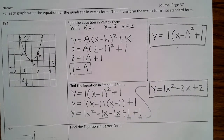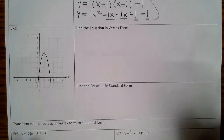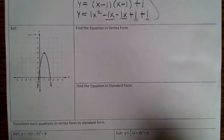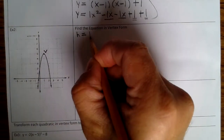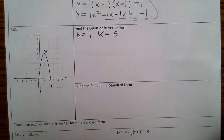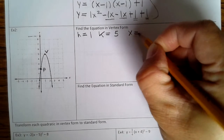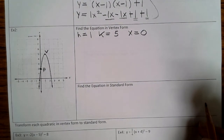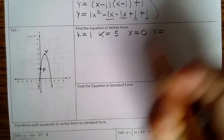Go ahead and finish up example 1. Now let's take a look at example 2. Find the equation in vertex form. So the first thing we need to do is identify the vertex, which is here, so h is 1, k is — it looks like 5. And then we need a point. This point right here looks pretty good. So that's x equals 0, and y equals 2.